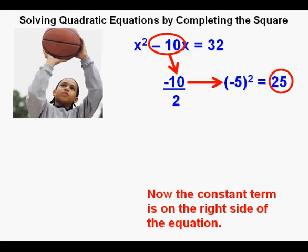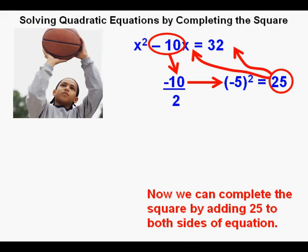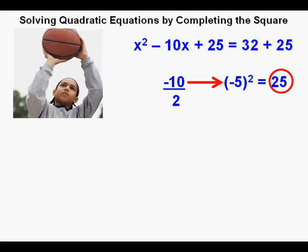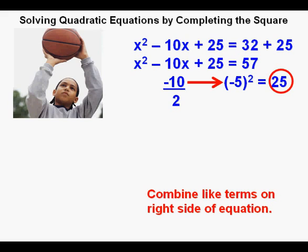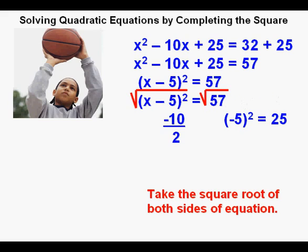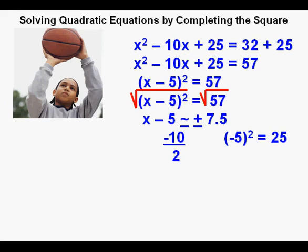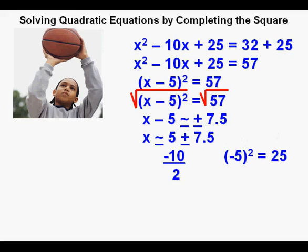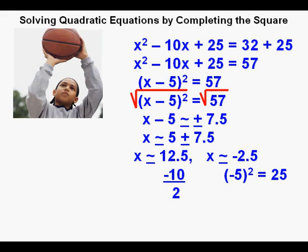First we move the minus 32 from the left over to the right, so we have x squared minus 10x equals 32. Now we complete the square by adding 25 to both sides: x squared minus 10x plus 25 equals 32 plus 25. The right side simplifies to 57, and the left side simplifies to quantity x minus 5 squared equals 57. Taking the square root of each side, x minus 5 approximately equals plus or minus 7.5, rounded to the nearest tenth. So x equals 5 plus or minus 7.5, giving x equals 12.5 or x approximately equals negative 2.5. Here is the answer in set notation — our final answer.